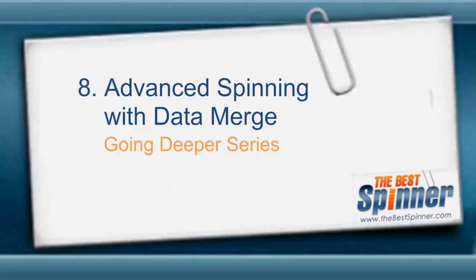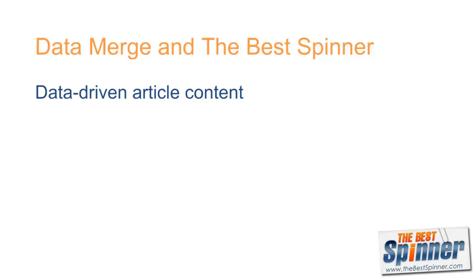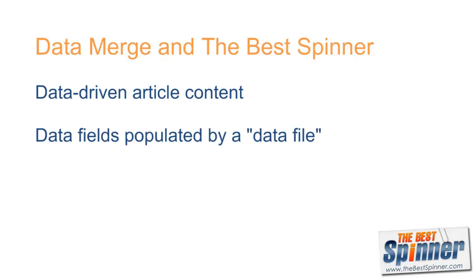In this video, I will show you how to leverage the power of Data Merge inside the Best Spinner. Data Merge is the ability to create fields in a document that automatically populate from a comma-delimited file. This file references the paths to various types of information taken from a file called the data file.